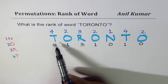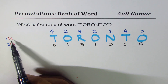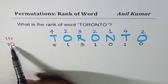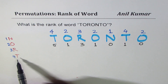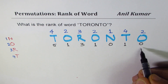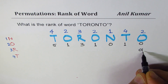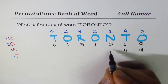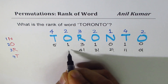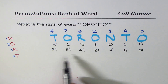Using permutations, if we look for all words starting with N that come before Toronto, there are 6 remaining letters arranged in factorial ways. So we multiply each count by its corresponding factorial: the first position by 6 factorial, the next by 5 factorial, then 4 factorial, 3 factorial, 2 factorial, 1 factorial, and 0 factorial.